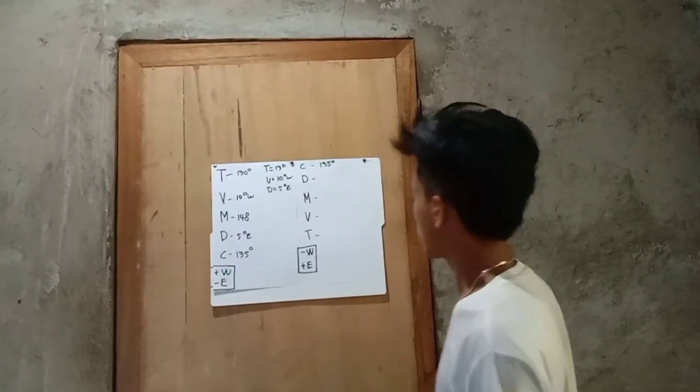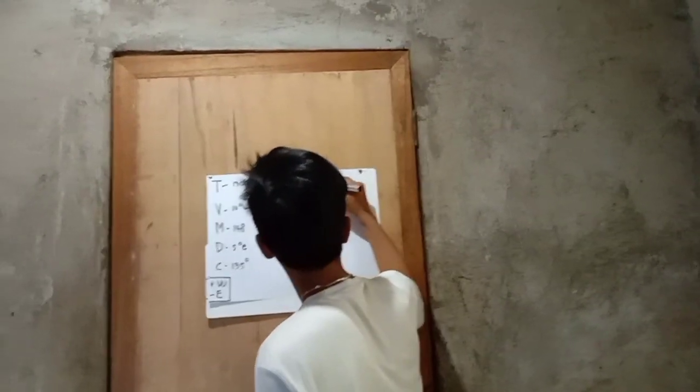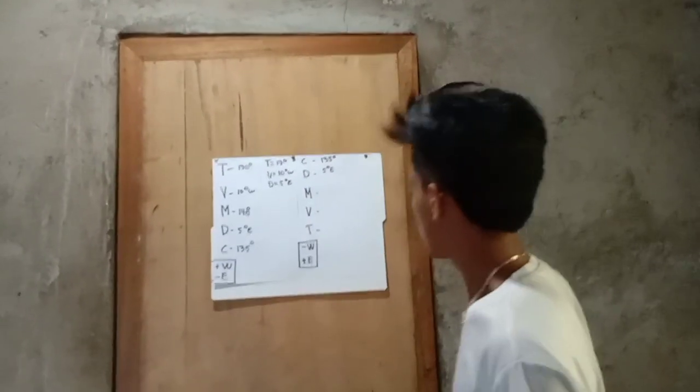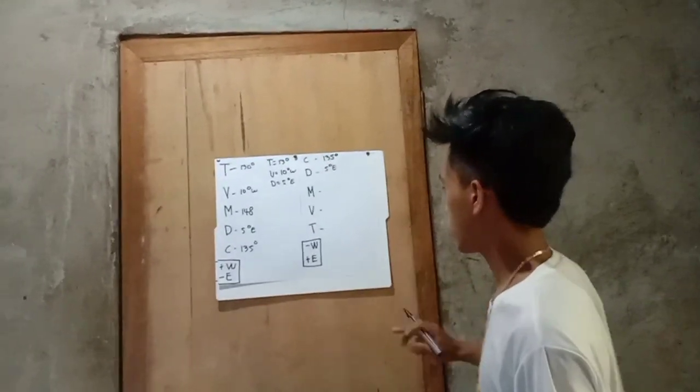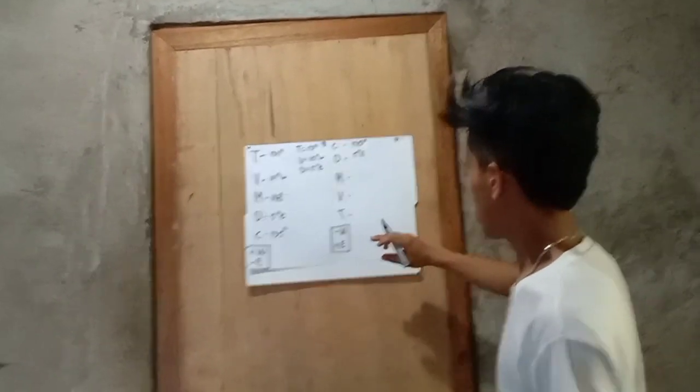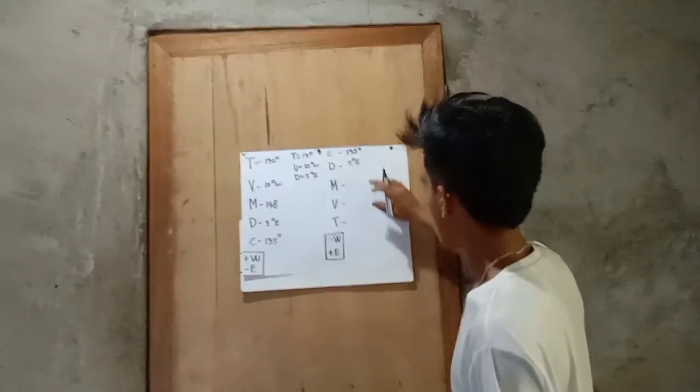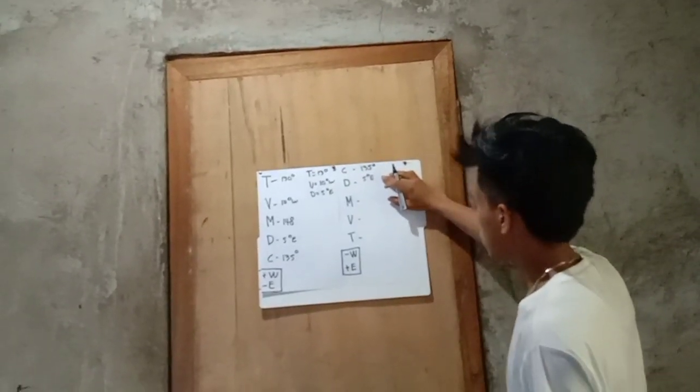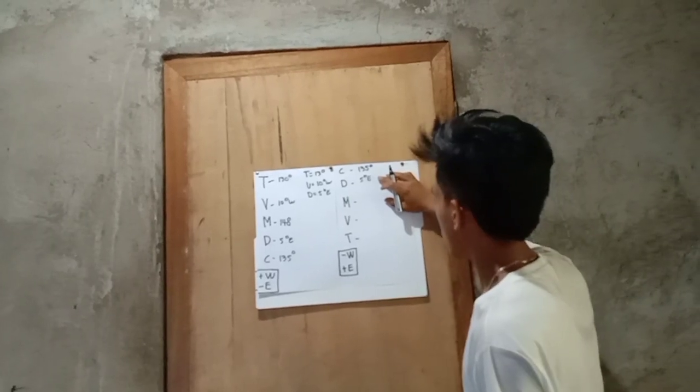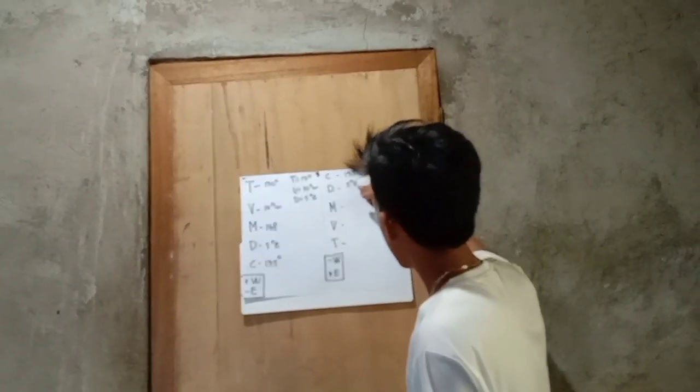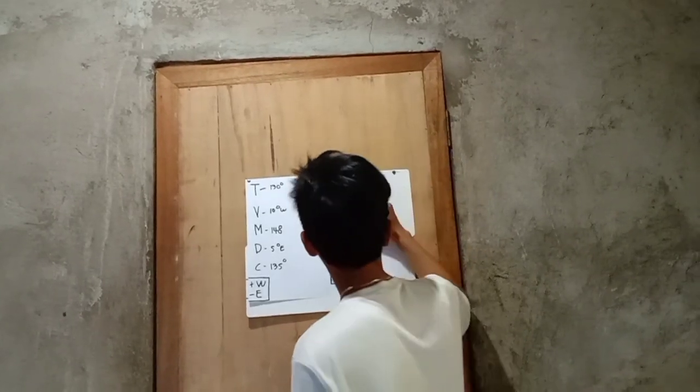So, our deviation is 5 degrees. So, it now reverses, so we must subtract, and the east, we will add. So, it is now east. We will add the compass north and deviation. 135 degrees plus 5 degrees east equals 140 degrees.